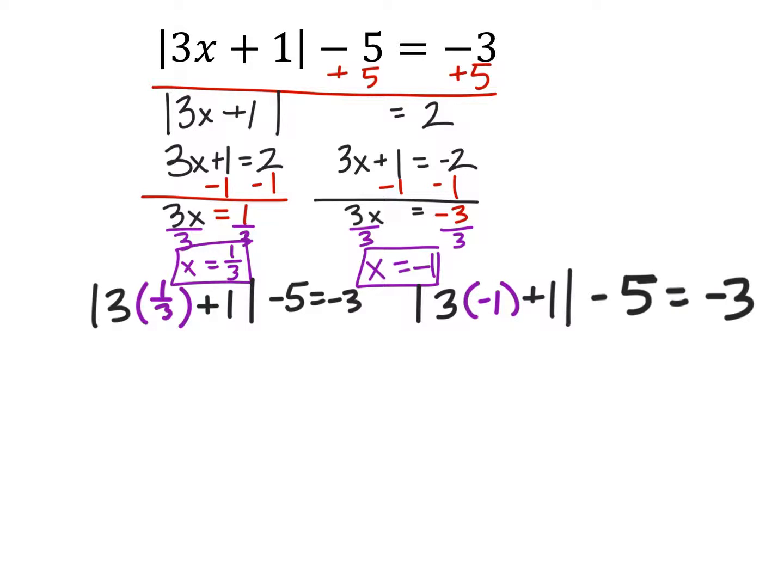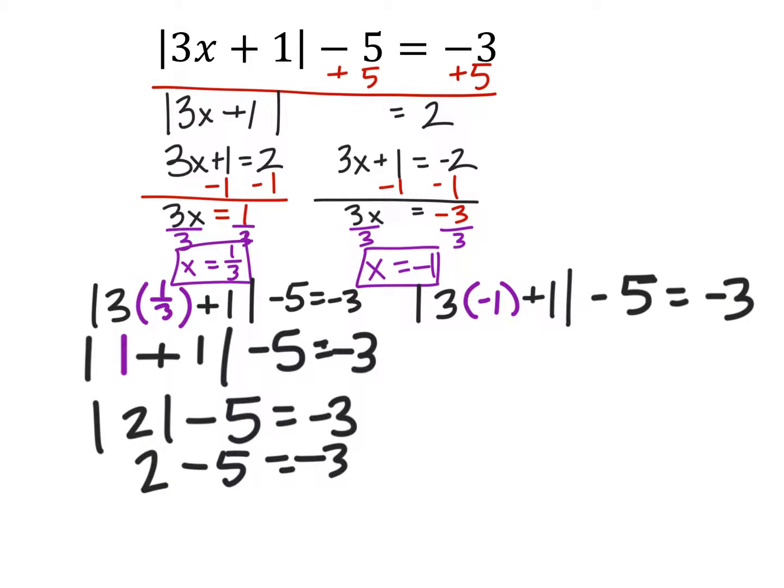What we're going to try to do here is to have the expression on the left equal the expression on the right which is negative 3 for both of these. So let's go ahead and do this first one and we're going to take 3 times that 1 third which is 1 and we'll still add the 1 then we'll subtract the 5 and that should equal the negative 3. Well the absolute value of 1 plus 1 is still 2 and then 2 minus 5 is actually negative 3 which is what we needed it to be. So we've checked this first answer, x is 1 third.